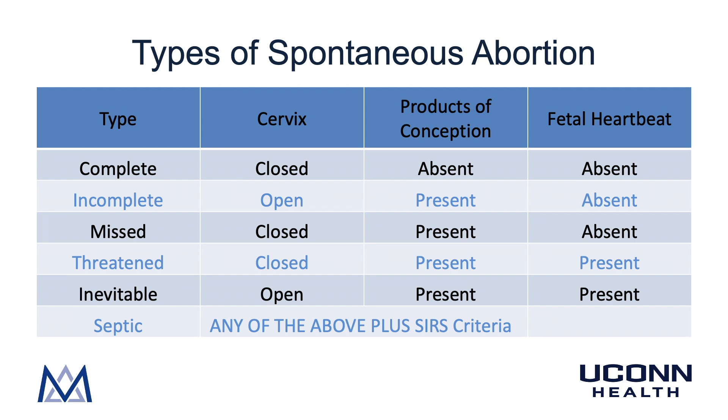Finally, with a septic abortion, you can have this really with any of the other types of abortion — it's just that SIRS criteria will be present. The patient will have tenderness, fever, foul-smelling vaginal discharge, and an elevated white count. As she gets sicker, she may be hypotensive and tachycardic. It is important to identify a septic abortion because this is treated differently: these patients need IV antibiotics and must be managed surgically.